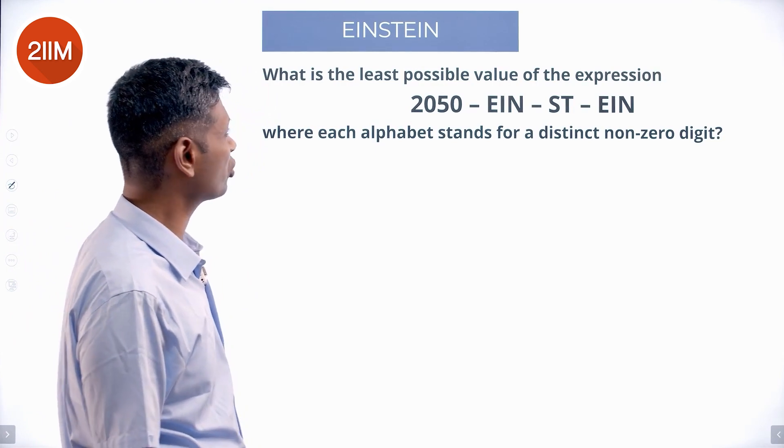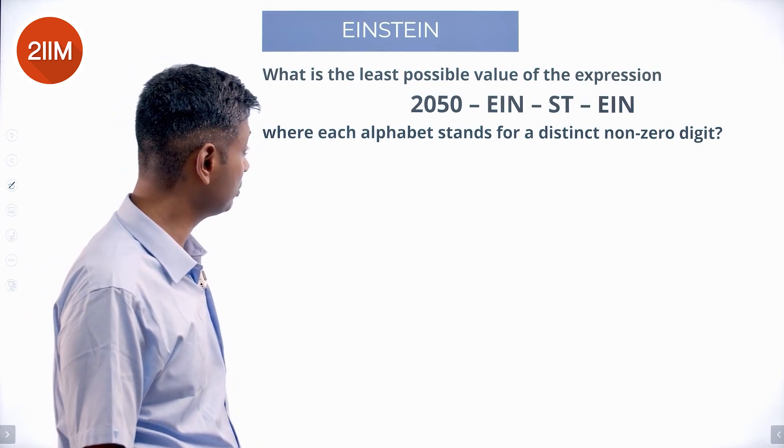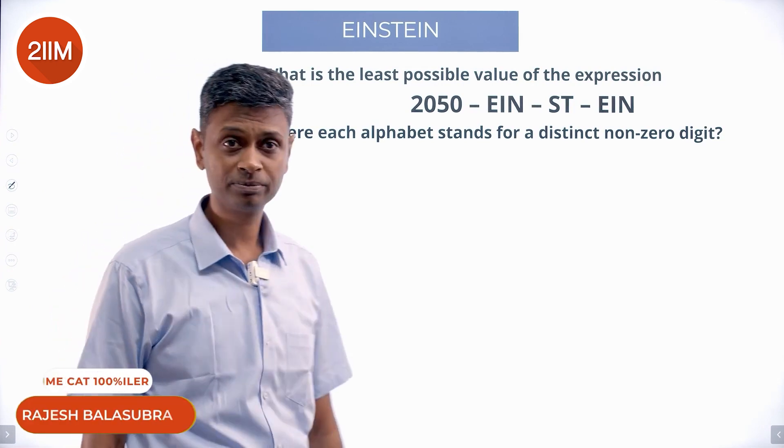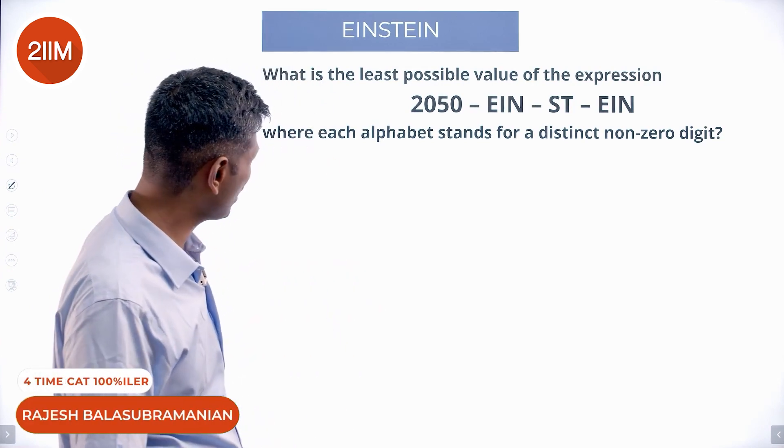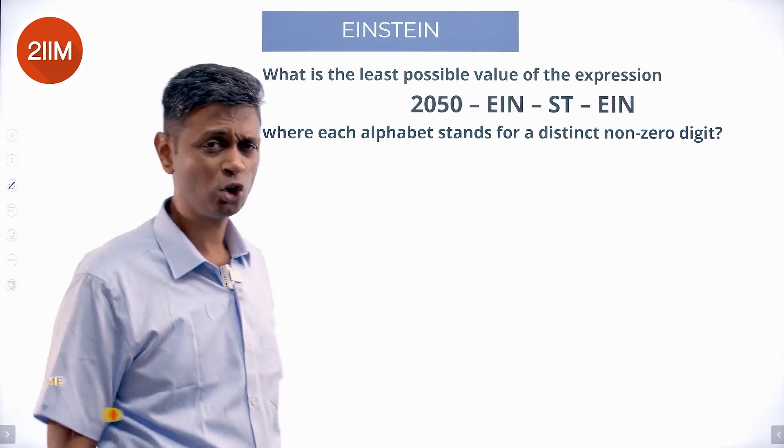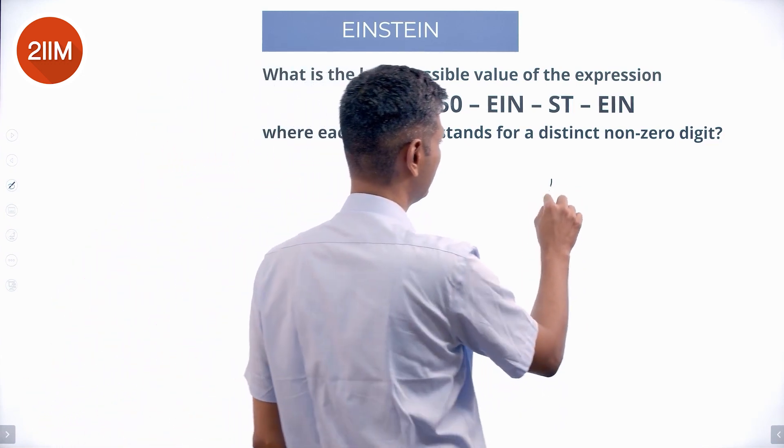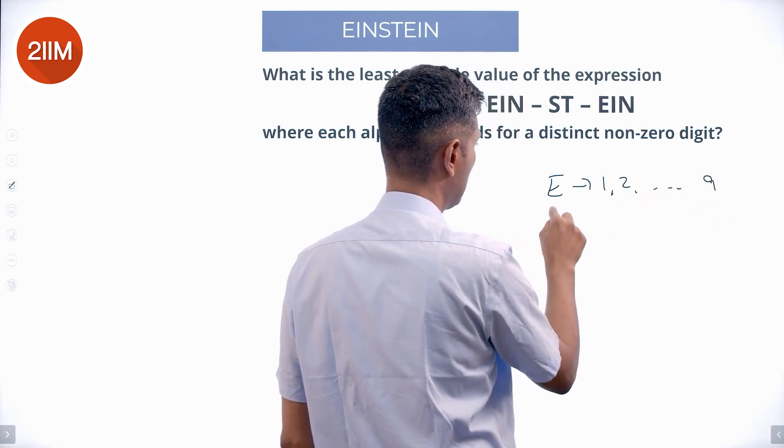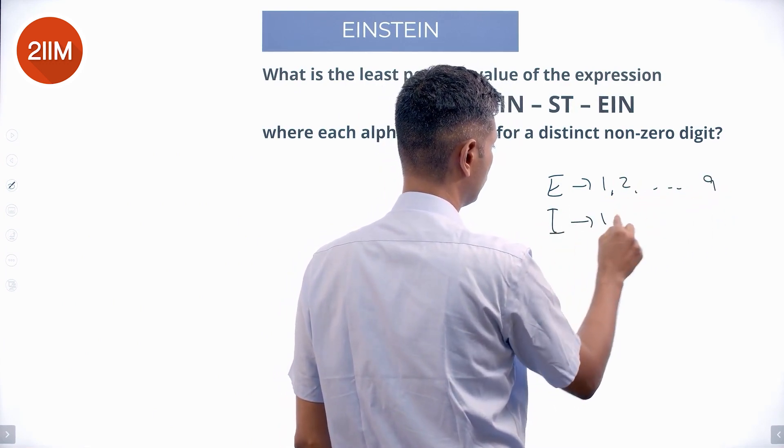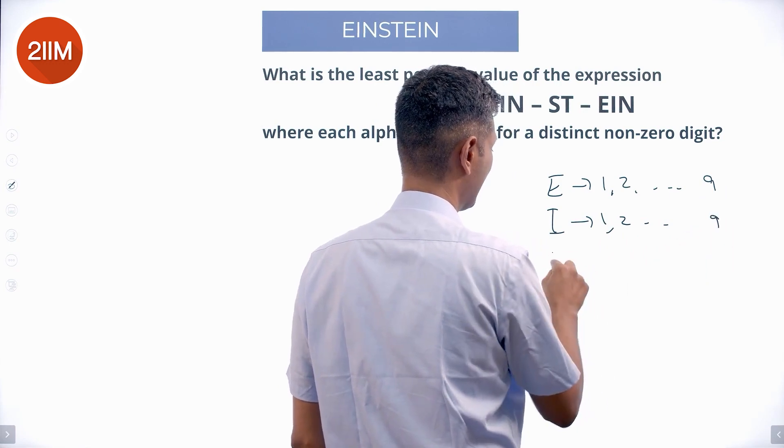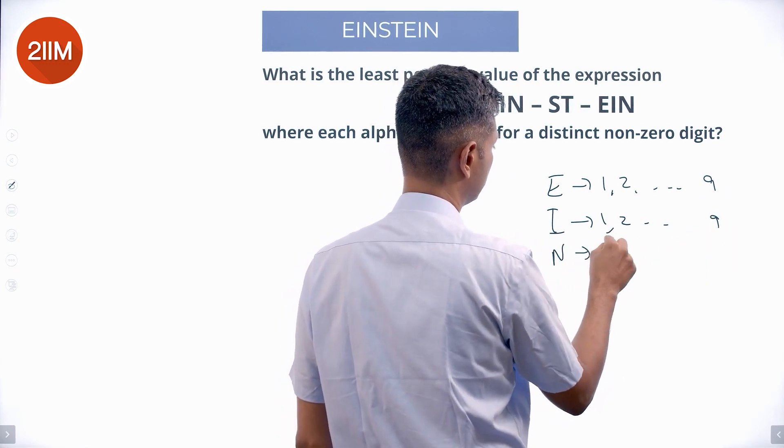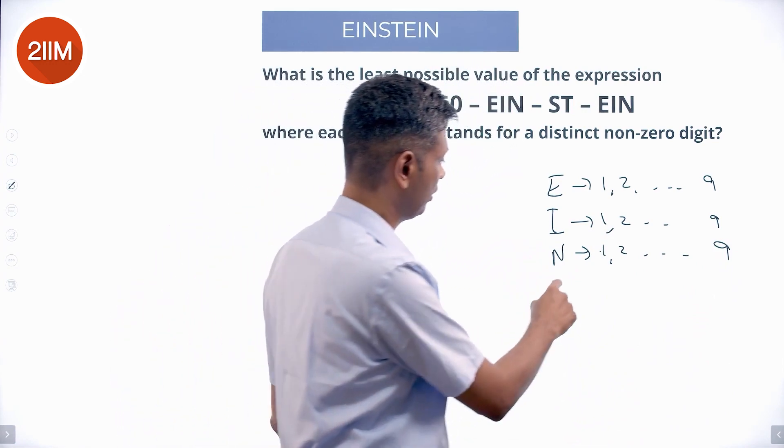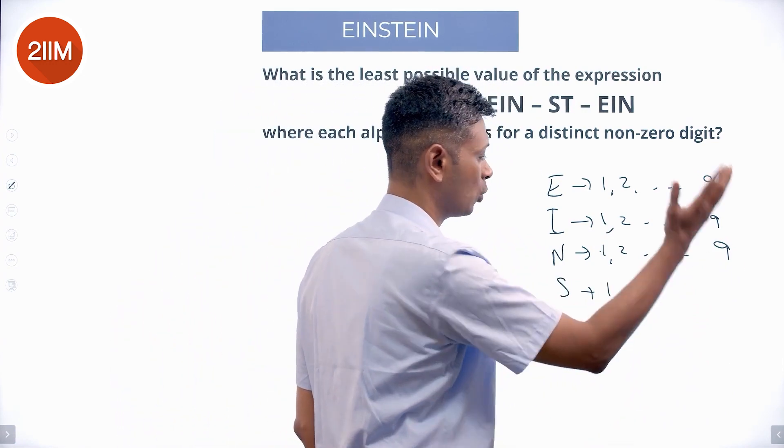What is the least positive value of the expression 2050 - EIN - ST - EIN where each alphabet stands for a distinct non-zero digit? This means E could be anything from 1 to 9, I could be anything from 1 to 9, N could be anything from 1 to 9, S could be anything from 1 to 9, and so on.